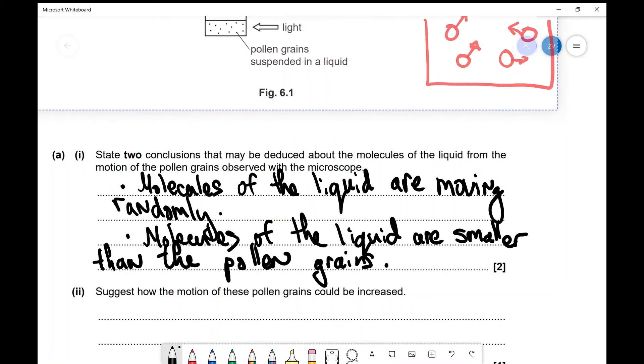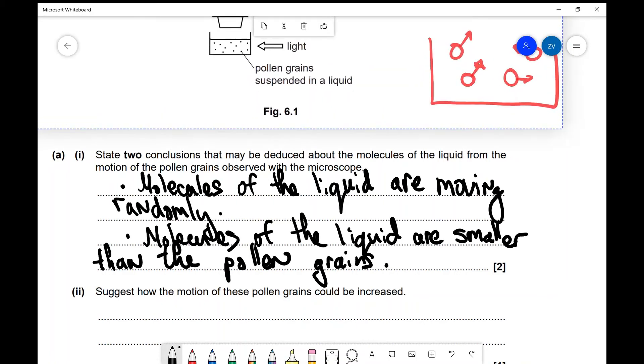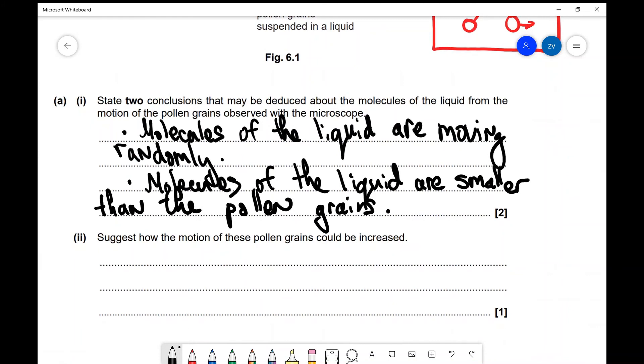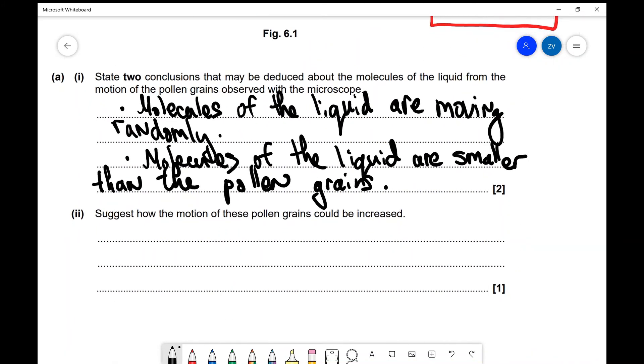Okay, perfect. Now let's have a look at the final example. So how the motion of these pollen grains could be increased. The only way you're going to make them increase their amplitude of vibration or their motion is to increase their temperature or to increase the temperature of the liquid. So we'll just write this down. So it's just a one marker question. Increase the temperature of the liquid.